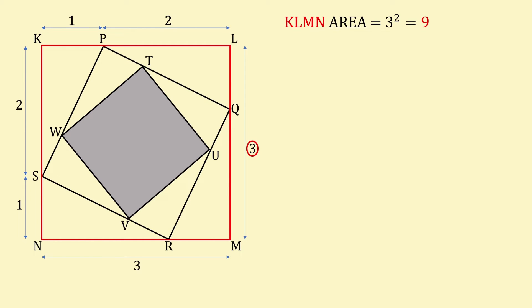To find the length of PS, one side of the medium sided square, triangle PSK is highlighted. As this is a right angle triangle, and we know the lengths of the other two sides, we can use Pythagoras theorem to work out PS, which is the hypotenuse.